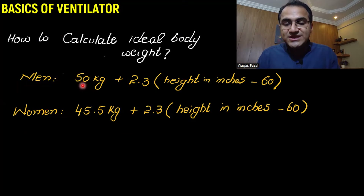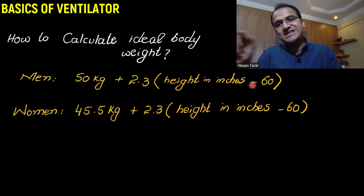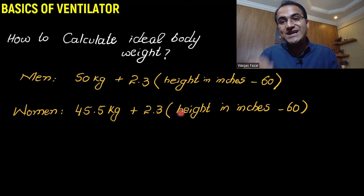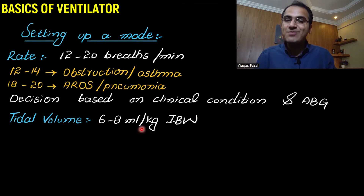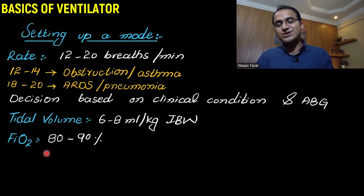Ideal body weight is calculated based on the patient's height. In men: 50 kg plus 2.3 multiplied by height in inches minus 60. In women: 45.5 kg plus 2.3 multiplied by height in inches minus 60. Based on that ideal body weight, you give tidal volume of 6 to 8 ml per kg.